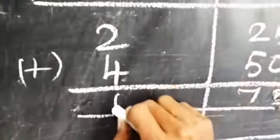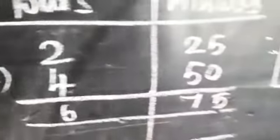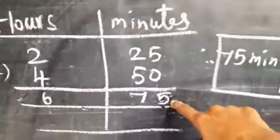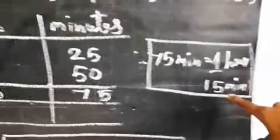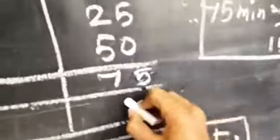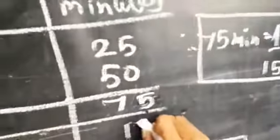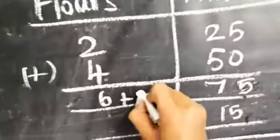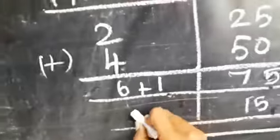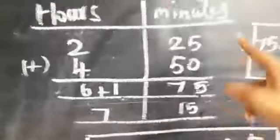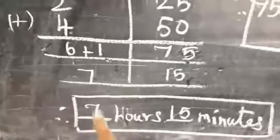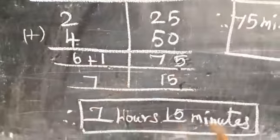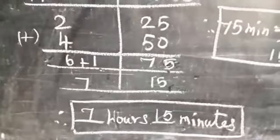75 minutes equals 1 hour 15 minutes. Write 15 minutes and carry 1 hour. Add the hours: 4 plus 2 equals 6, plus 1 carried equals 7. So the answer is 7 hours 15 minutes.